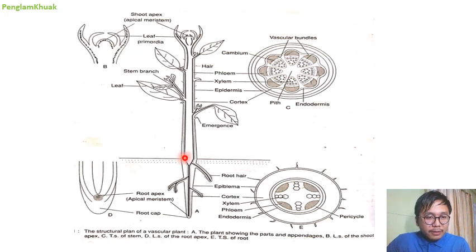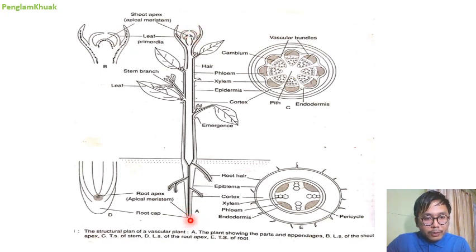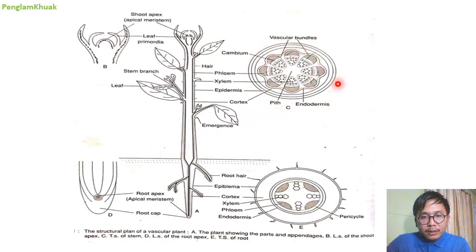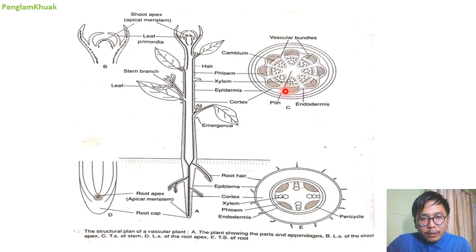This is a picture representing the structure and parts of a vascular plant. The tip portion is called the shoot apex or apical meristem, and the bottom portion is called the root apex or root apical meristem. If you cut the stem in a transverse section you will find different components: the outer portion is called the epidermis, then a cortex layer made up of parenchyma cells, then endodermis, phloem, cambium, xylem, and the middle portion is called the pith.